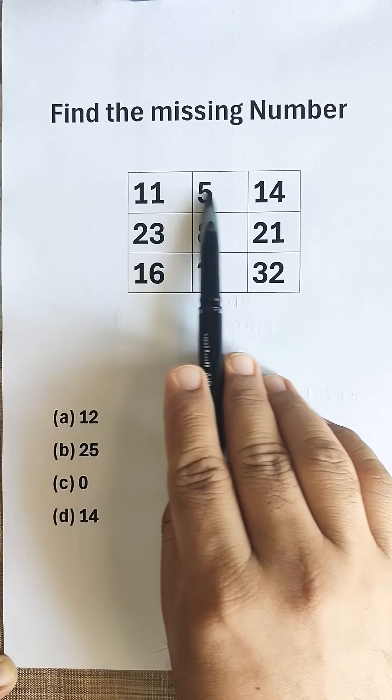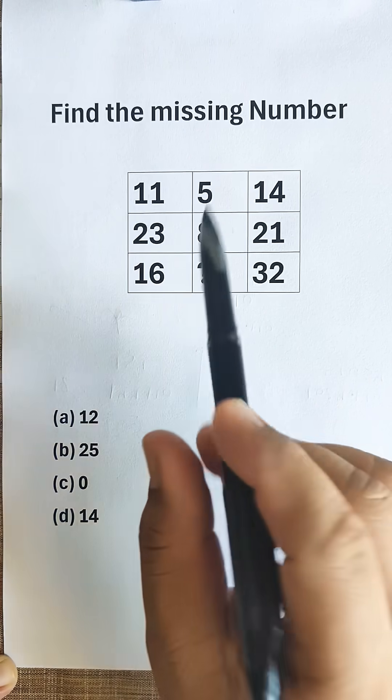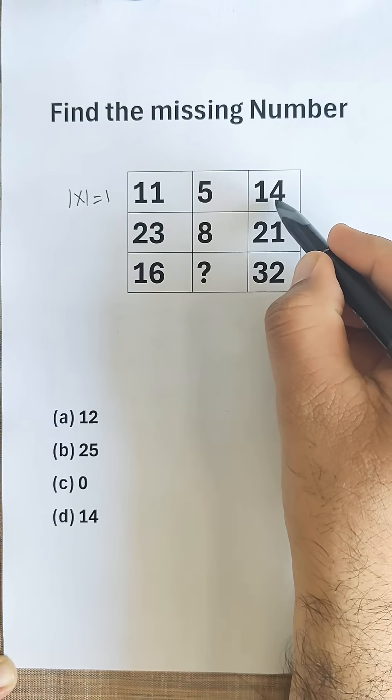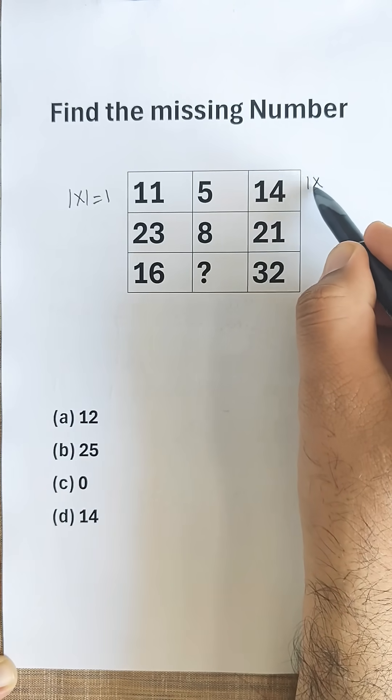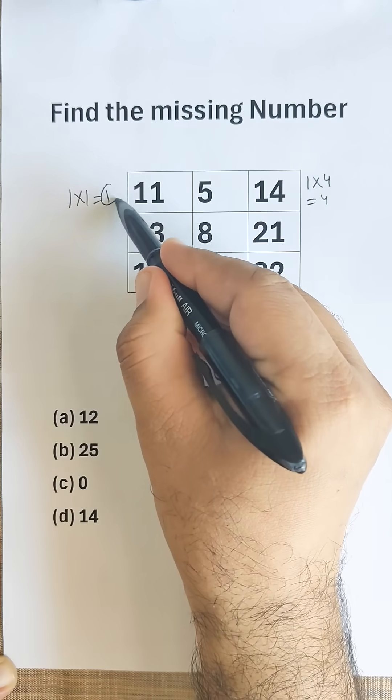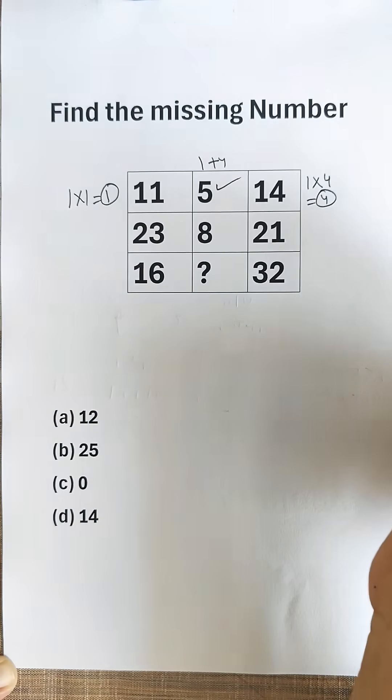Now if we apply the logic row wise, we have 11. If we find the product of digits, 1 into 1 is 1, and we have 14. If we find the product of digits, 1 into 4 is 4. If we add this 1 and 4, we get 5.